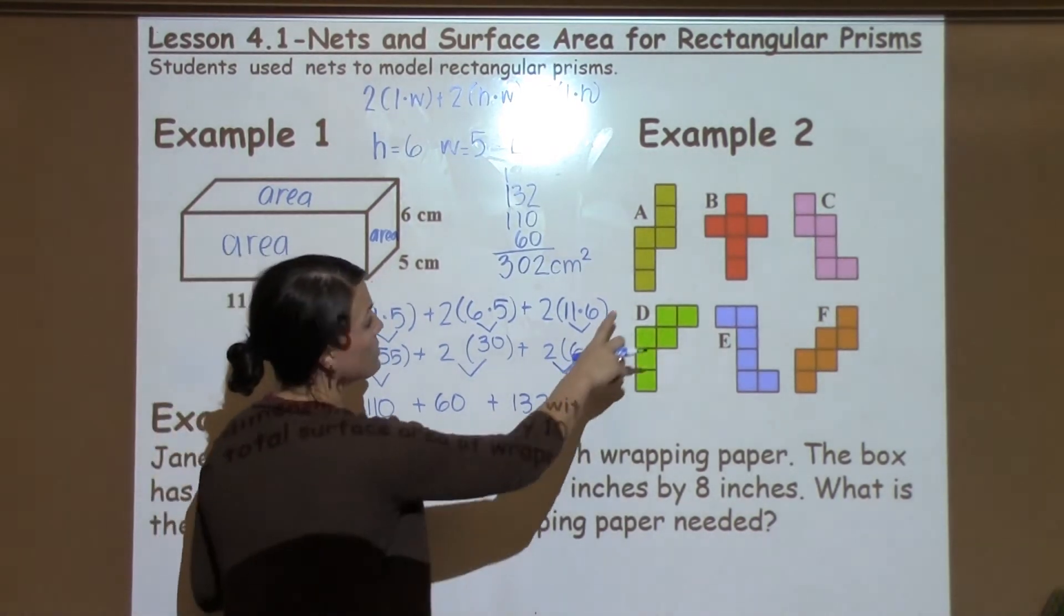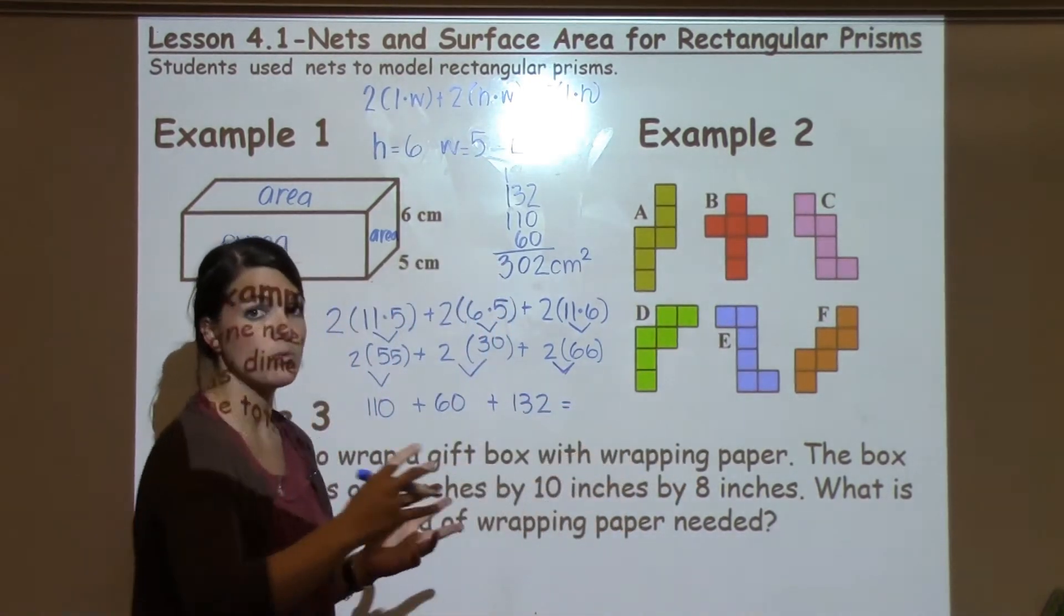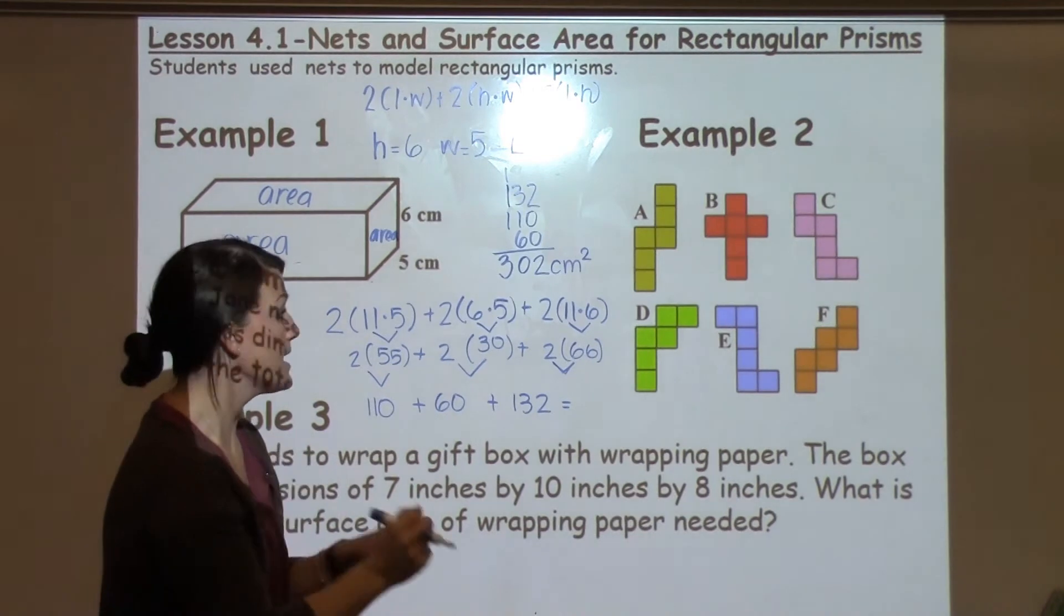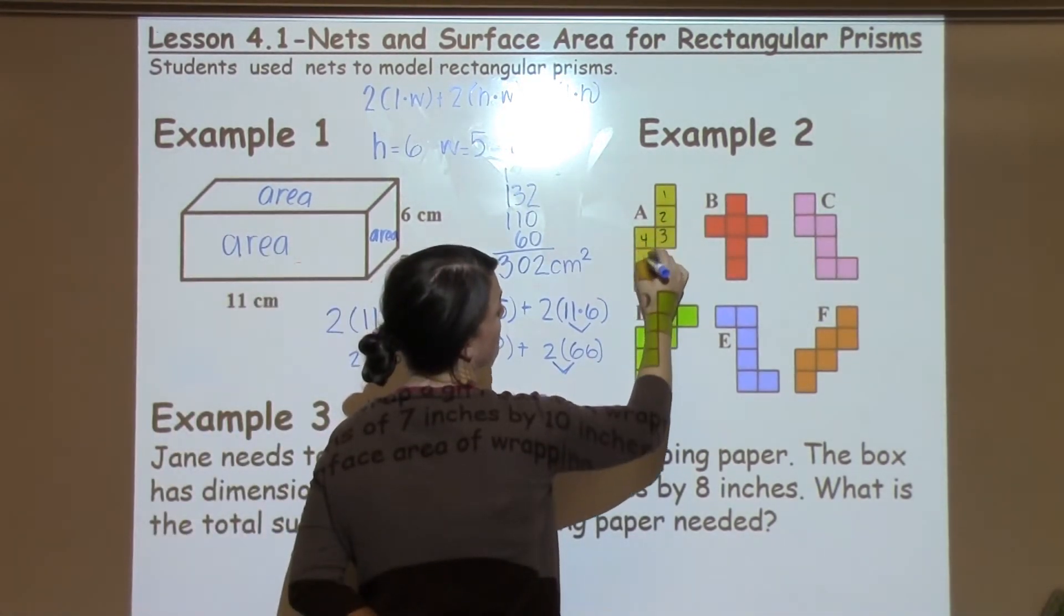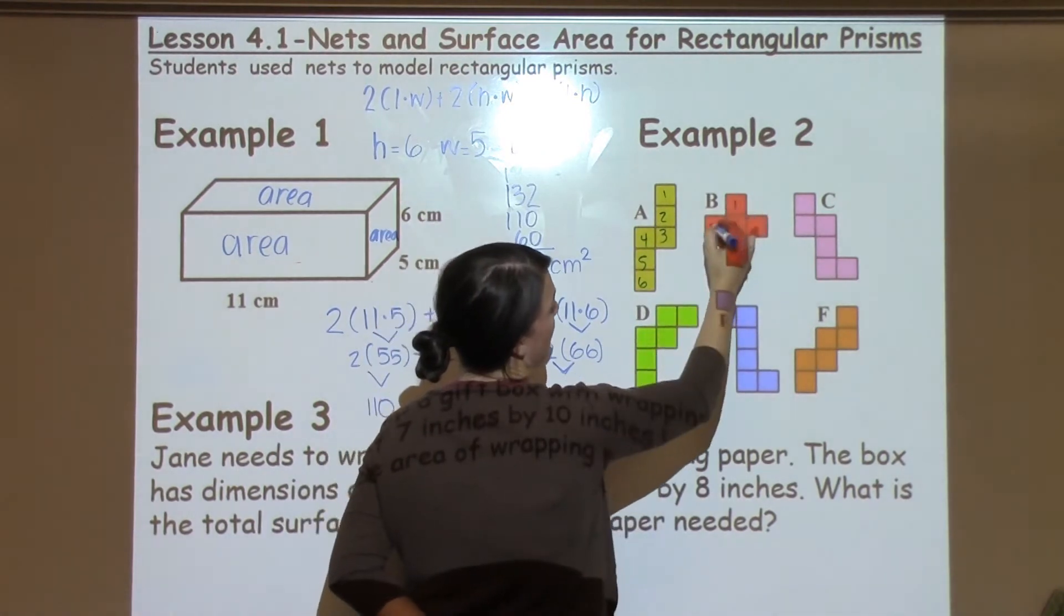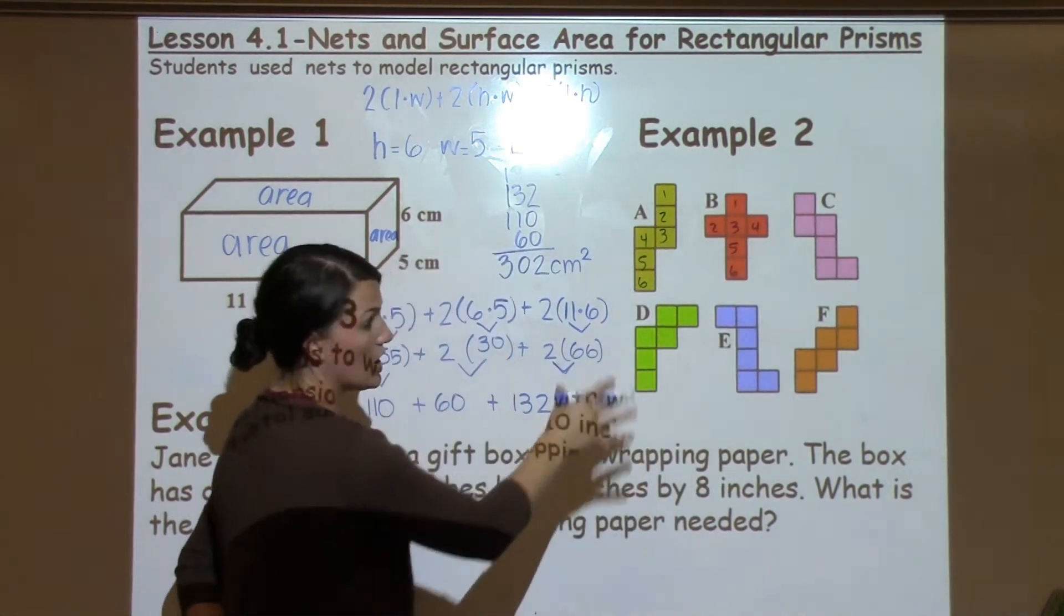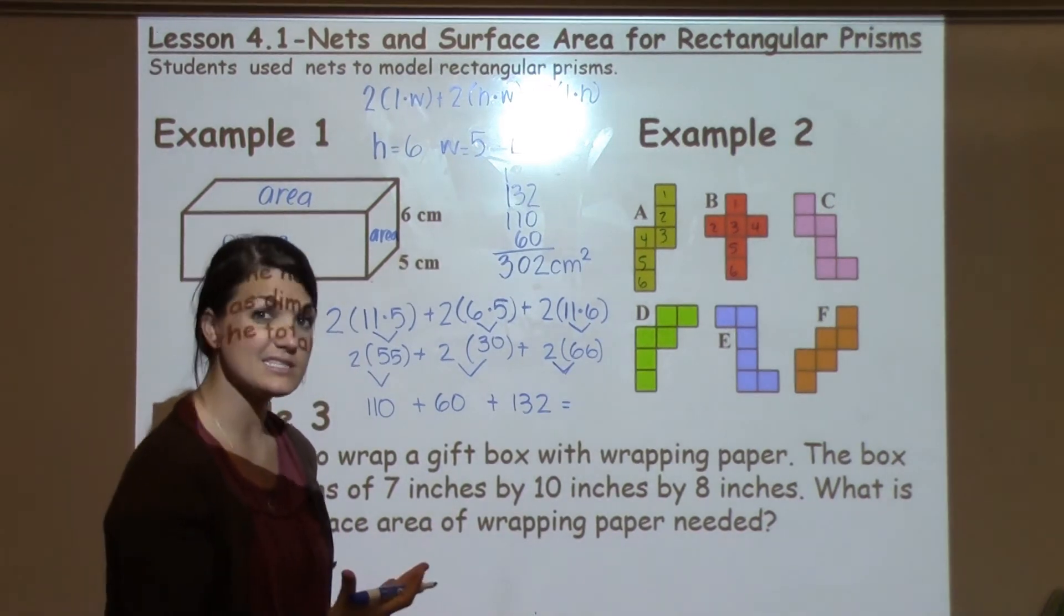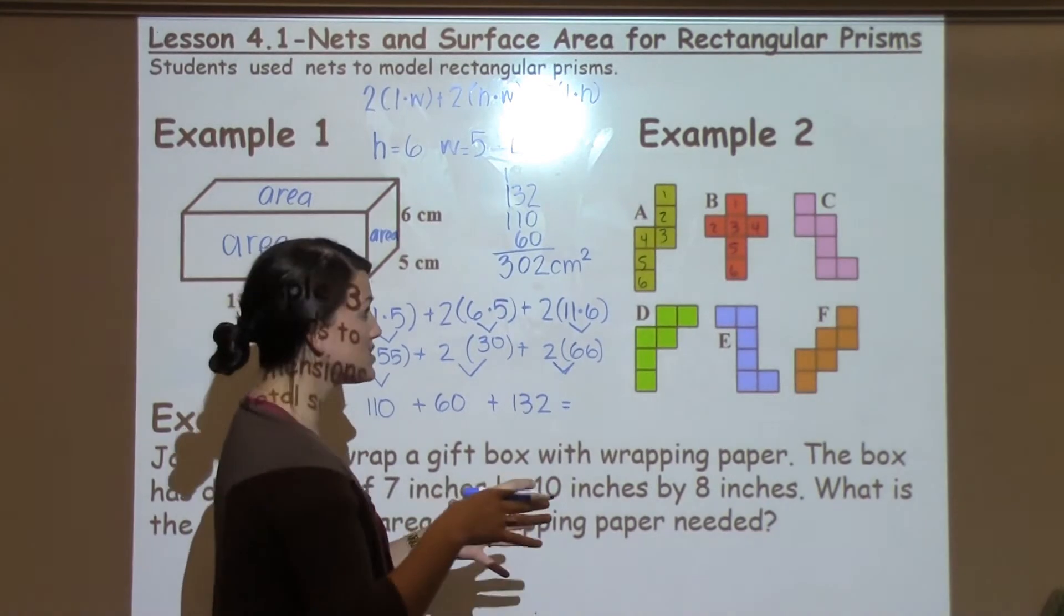So we wanted to include for you today some examples of cubes. All of these nets would fold up to make a cube. One thing to look for is to make sure when you're looking with your student at home that all of them have six faces. That's the first thing to look for. Does this net have six faces? If it does, then you start thinking about and visualizing, could I fold this one to the side and this one over?